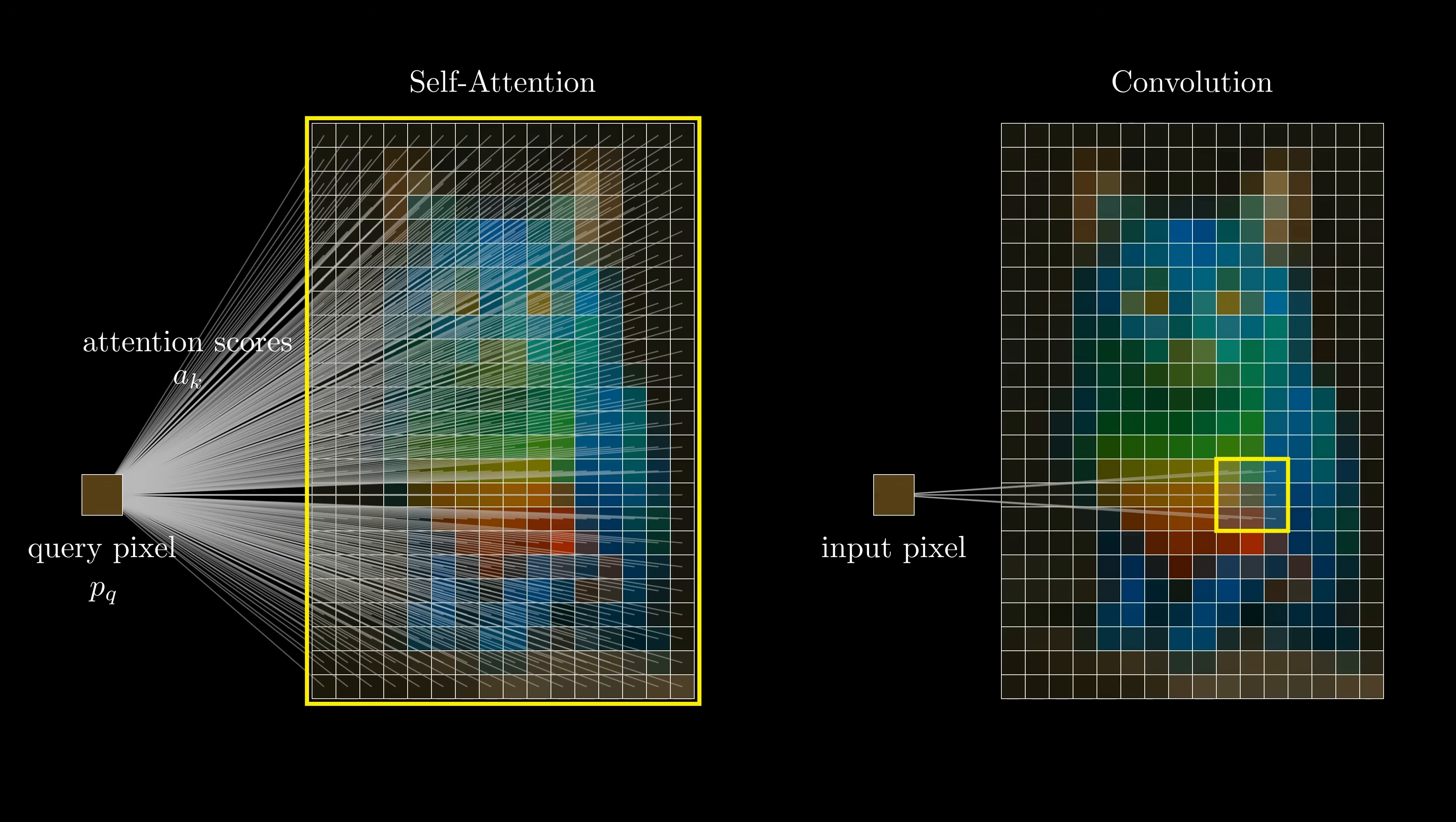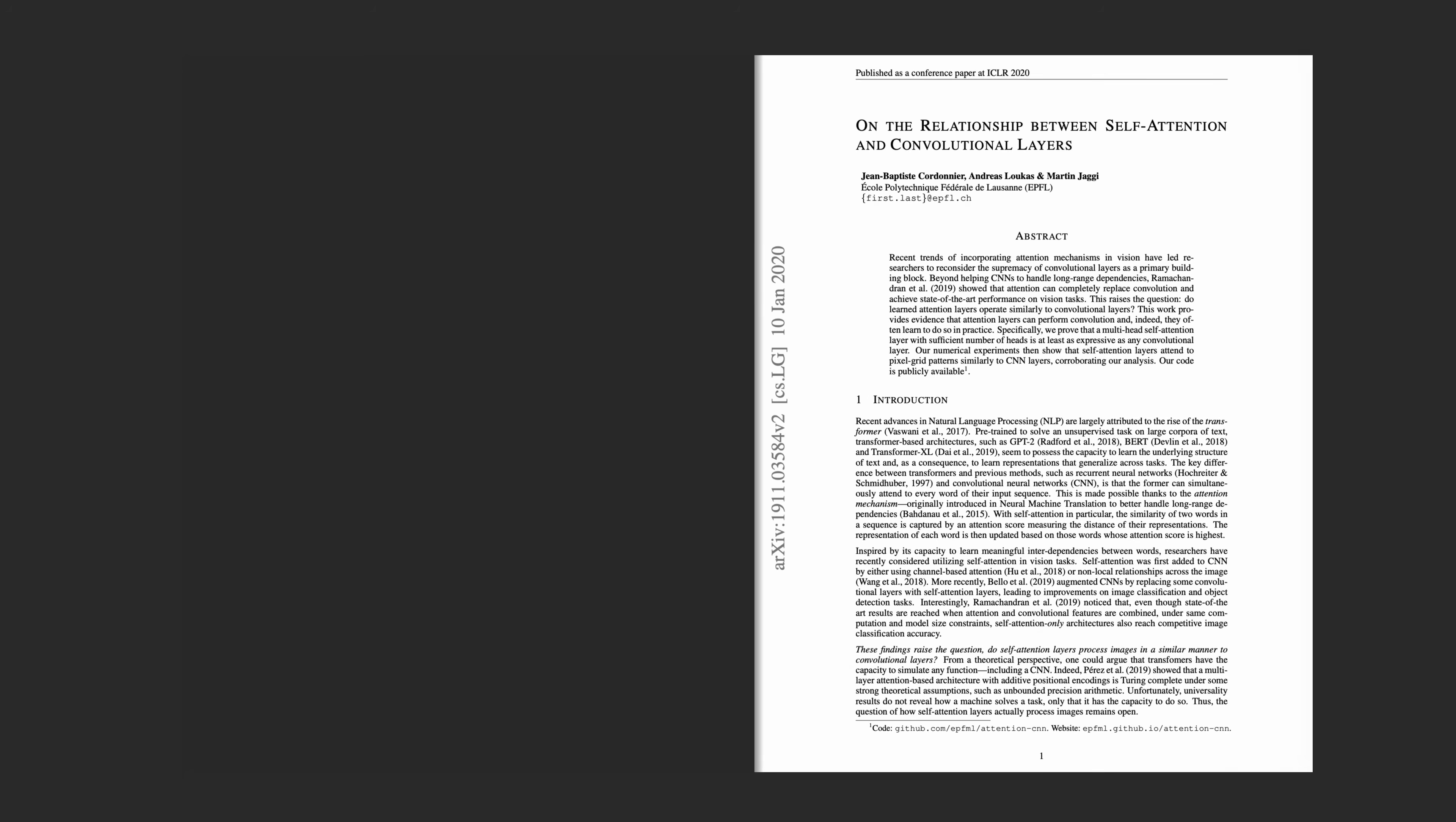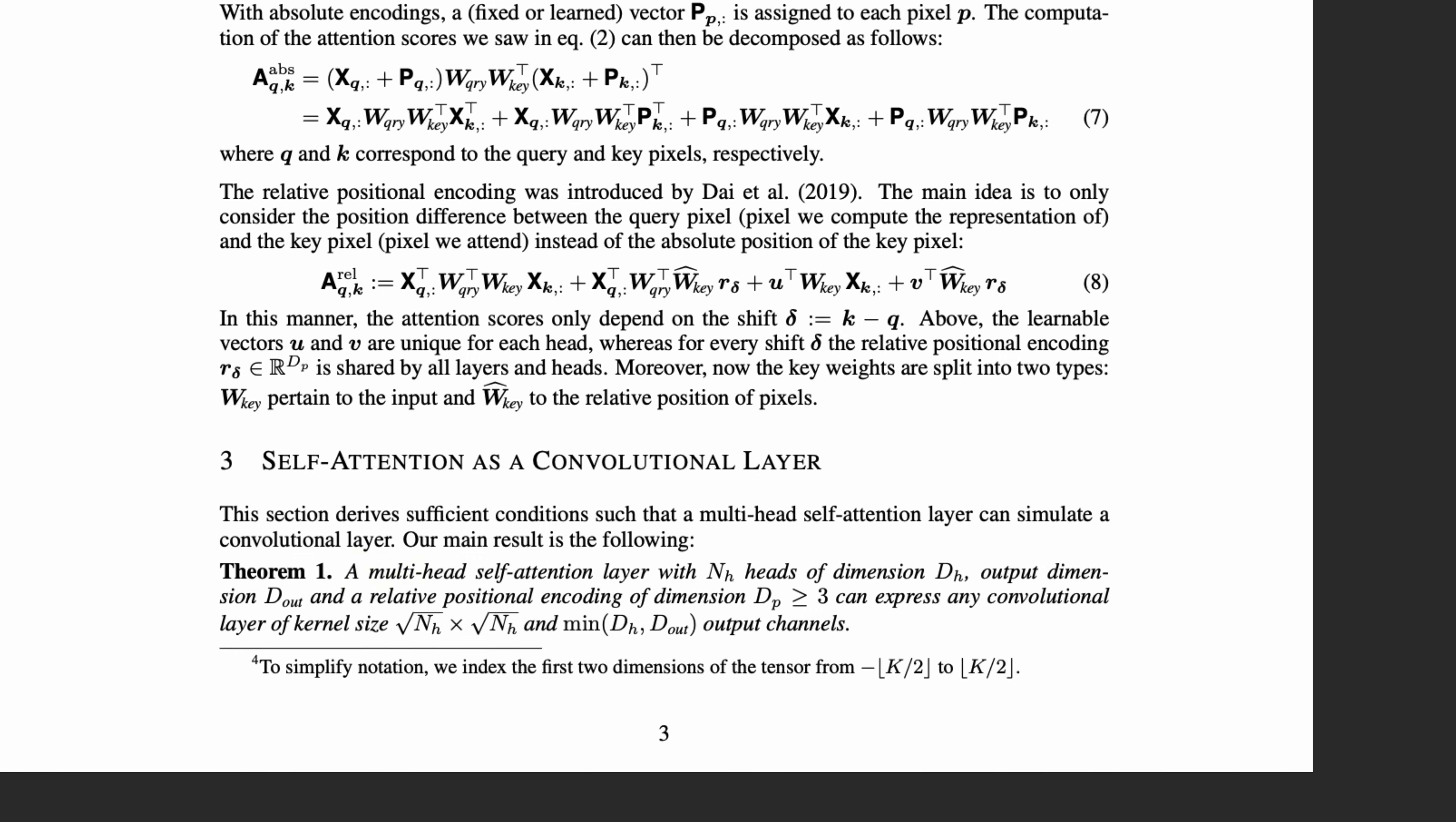So there's already an intuition here that self-attention is a more general, less biased operation. But we can make an even stronger statement: attention is a superset of convolution. This paper shows that self-attention layers can and do learn to perform convolutional operations. They even formalize this in a theorem. A multi-head self-attention layer with n heads can express any convolutional layer of kernel size square root of n by square root of n. Let's unpack that.